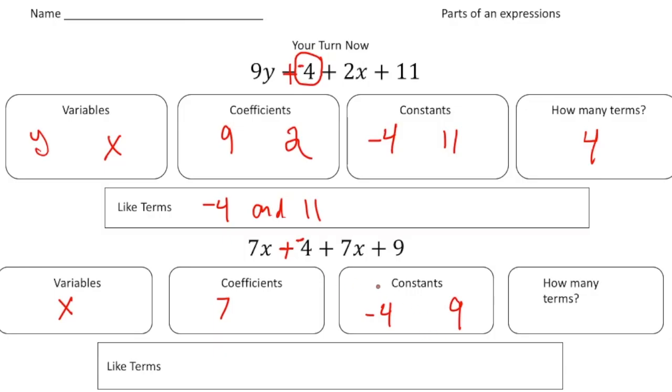And then how many terms? We have again 4 terms. And then the like terms, we could combine 7x and 7x. And then finally the constants, we could combine the negative 4 and the 9. How'd you do?